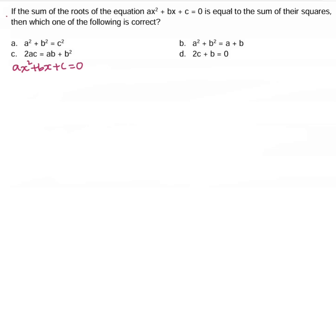The sum of the roots: α + β = -b/a. The product of the roots: αβ = c/a. We will call this equation 1.